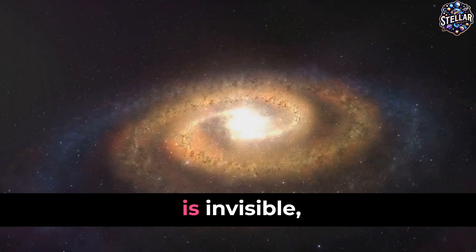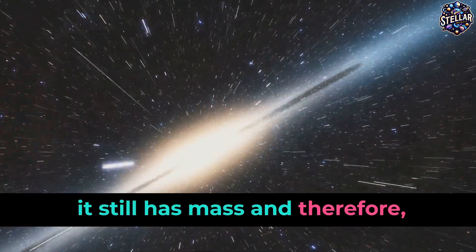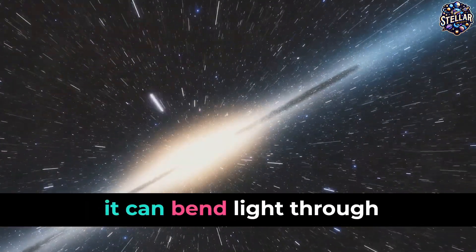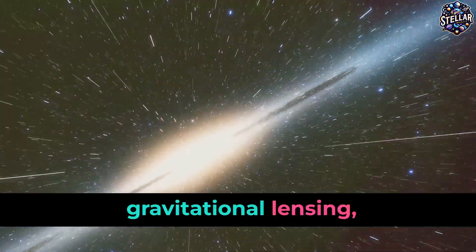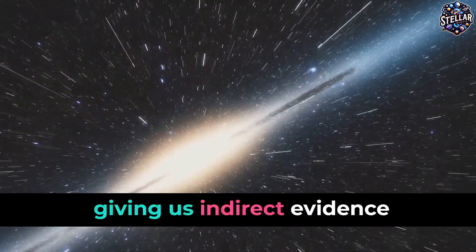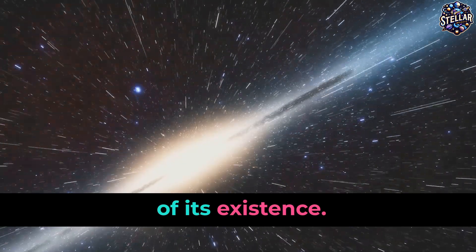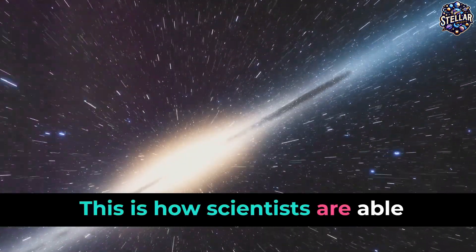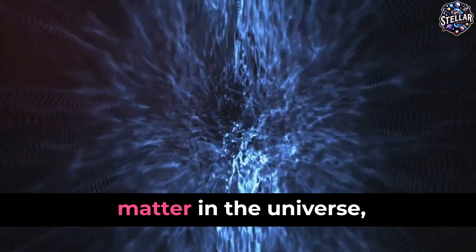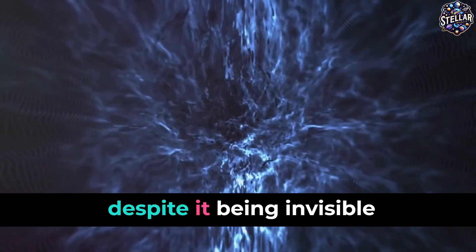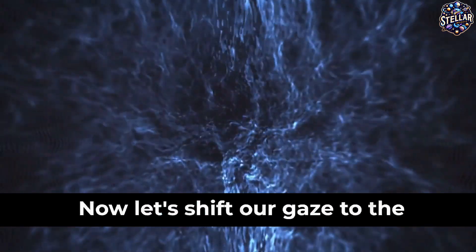You see, even though dark matter is invisible, it still has mass and therefore gravity. Thus it can bend light through gravitational lensing, giving us indirect evidence of its existence. This is how scientists are able to map the distribution of dark matter in the universe, despite it being invisible to our telescopes.